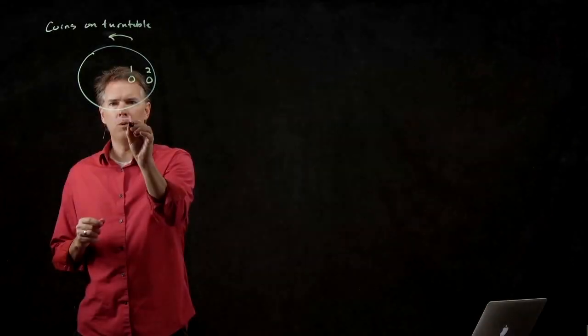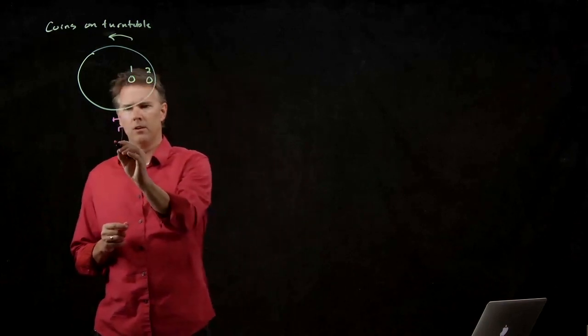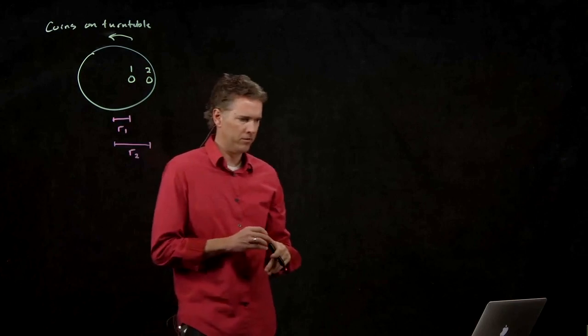So R1 will be how far coin 1 is from the center, and R2 will be how far coin 2 is from the center.